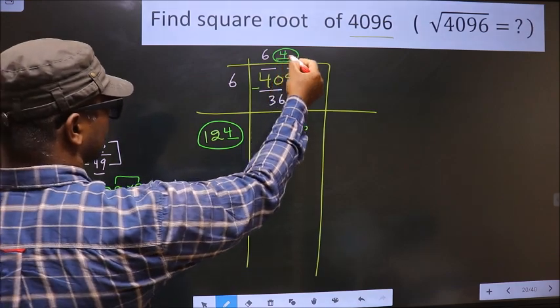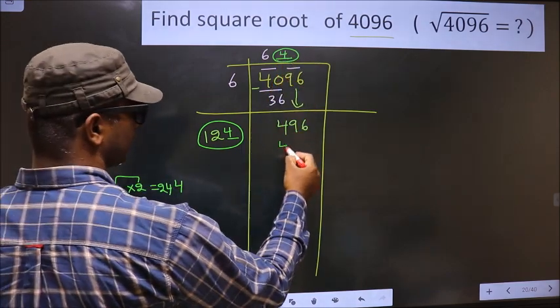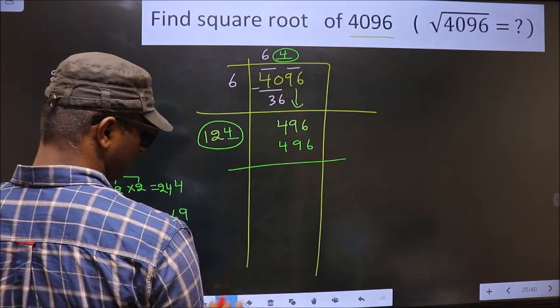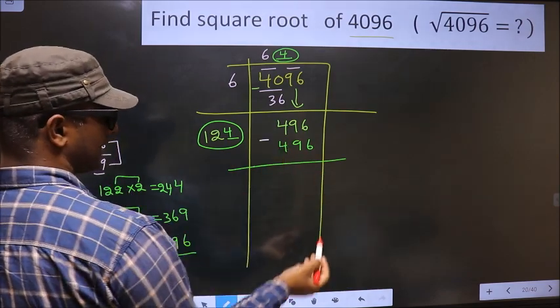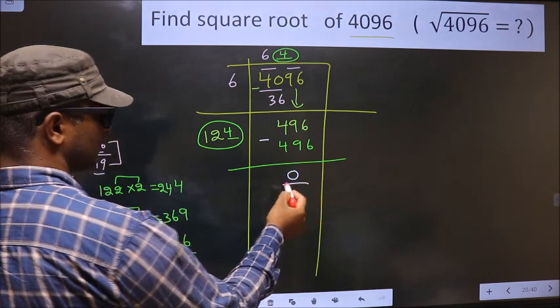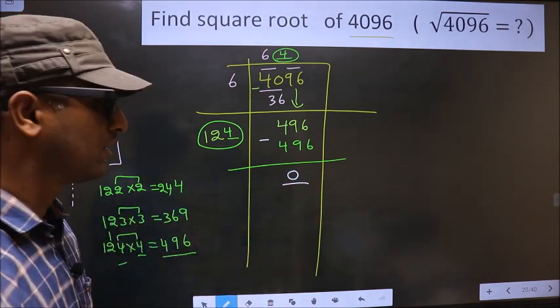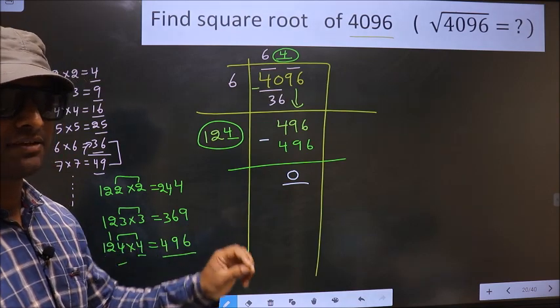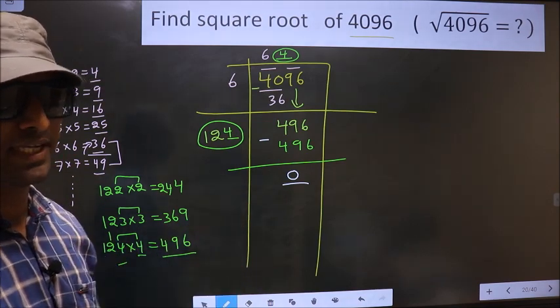So we take 4 here and here. And here 496. Now you subtract. 496 minus 496 is 0. We got 0, that means the given number is a perfect square.